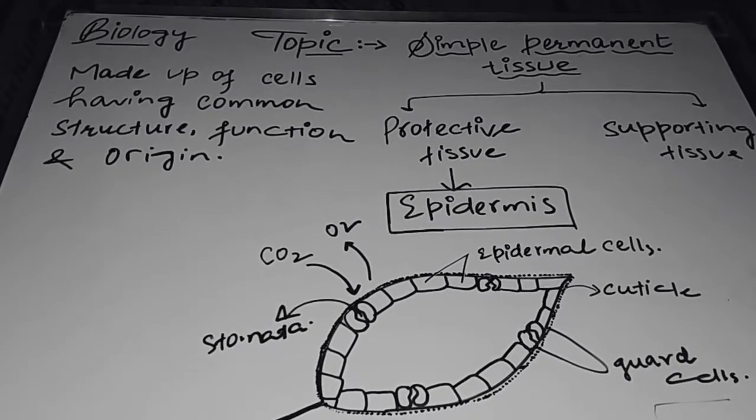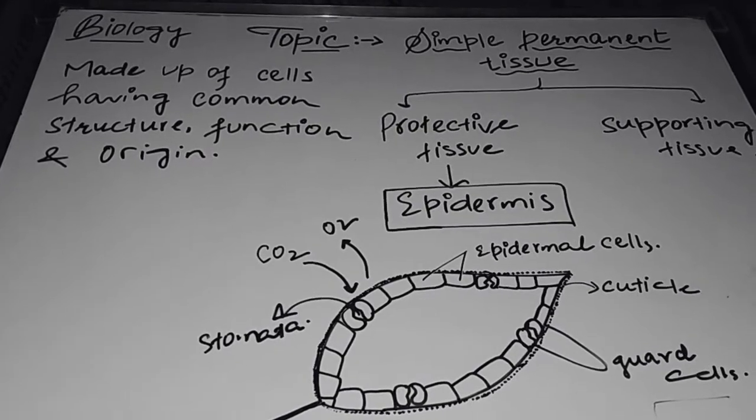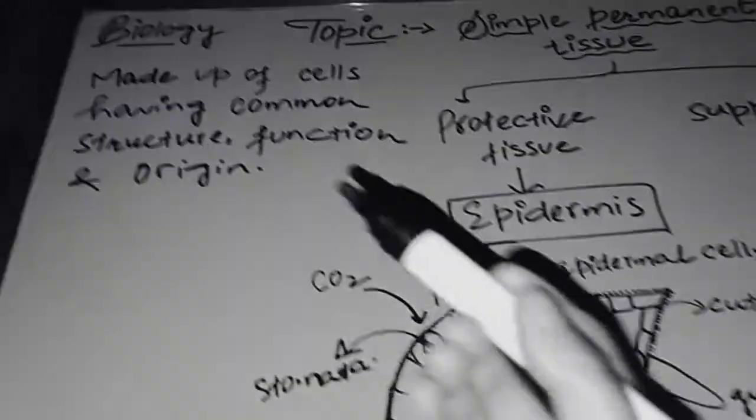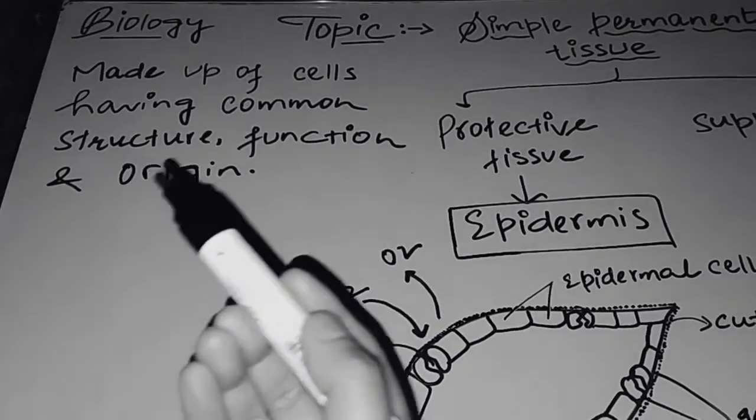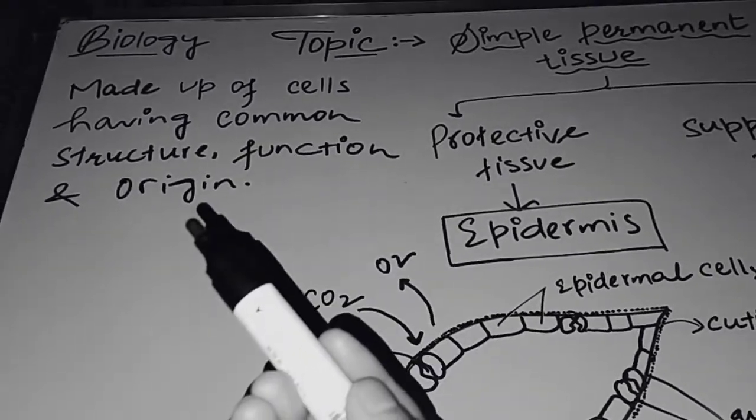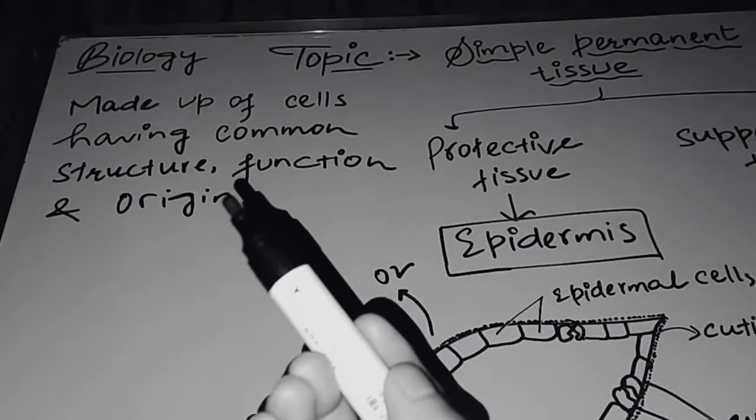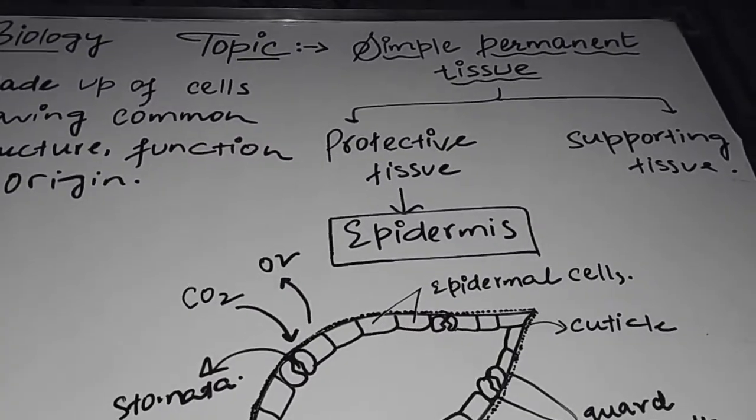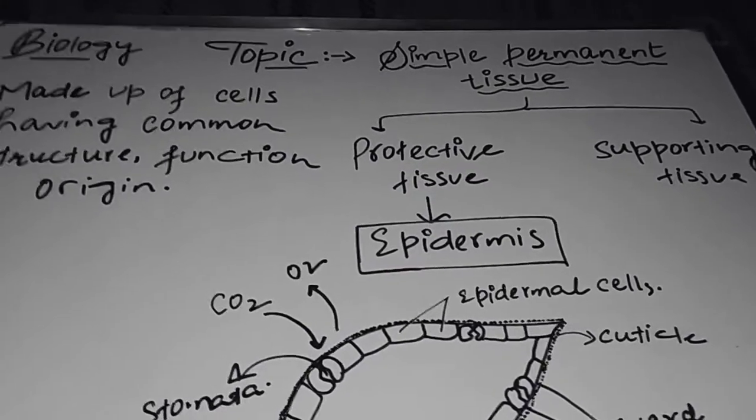Depending upon the types of cells of which they are made, in simple permanent tissue there are cells that will have the same structure, the same function, and origin. Those cells which have common structure, function, and origin form simple permanent tissue.